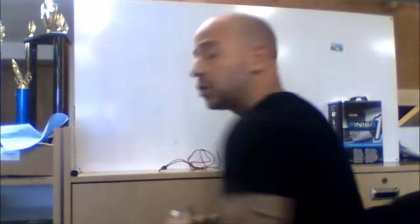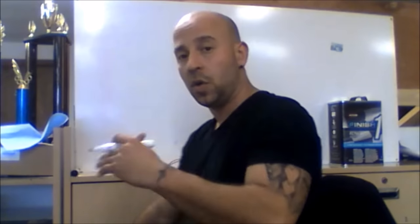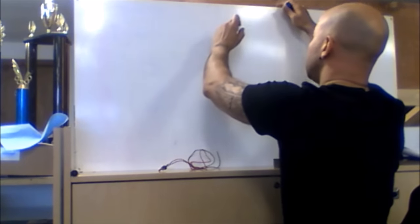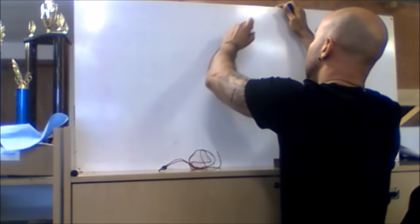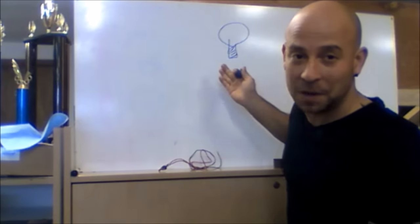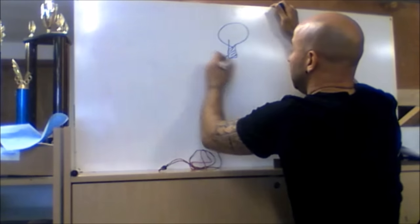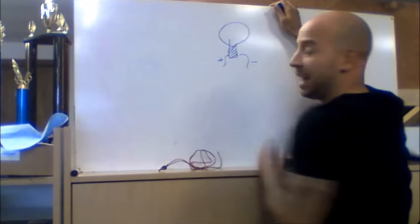All a toggle switch does is break connection for either power or ground. So let's say we're gonna call this a light bulb and the light bulb needs power and ground.